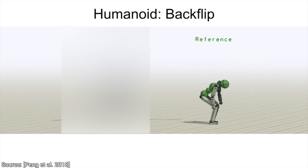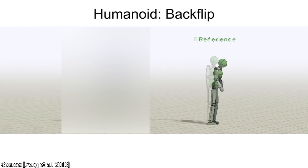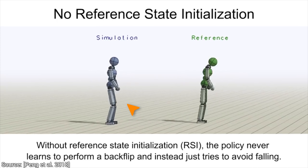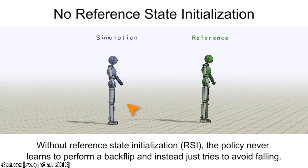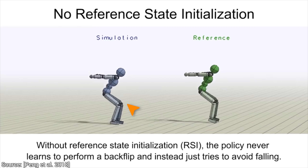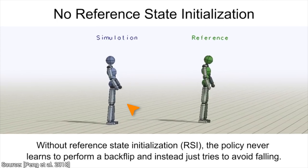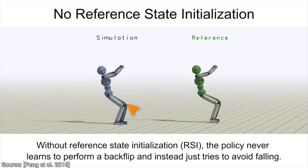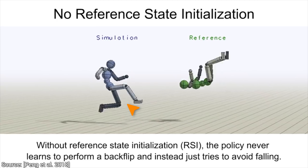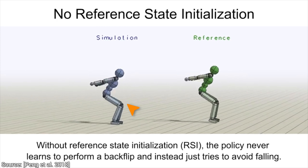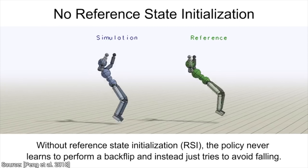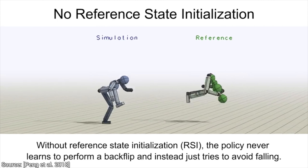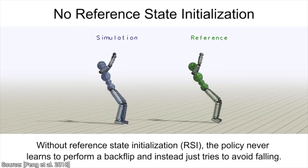Now that we have built up confidence in this technique, let's think bigger and perform a backflip. Well, that didn't quite work. Why is that? We just established that we can give it a reference motion and it can learn it by itself. This character failed to learn a backflip because it explored many motions during training, most of which resulted in failure, so it settled for a mediocre solution instead.